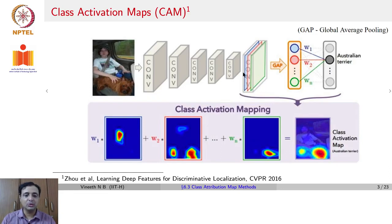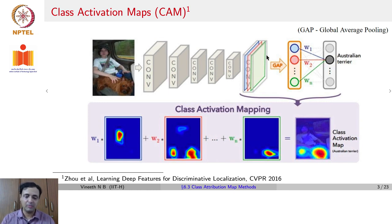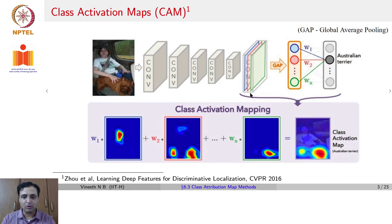CAM takes a convolutional neural network and uses the notion of global average pooling to achieve the objective. If you had say 5 to 6 convolutional layers in your architecture, you take the last convolutional layer. For each map in that convolutional layer — remember, you could have 100 filters, you would have 100 maps — for each of those maps, you do global average pooling, or GAP. What does global average pooling do? You take a particular feature map and average all the intensity values there into one single scalar.